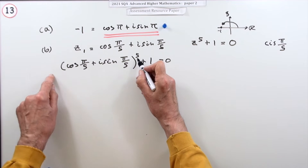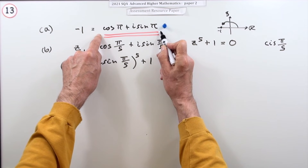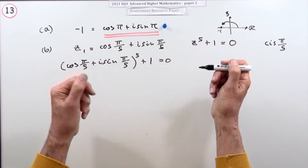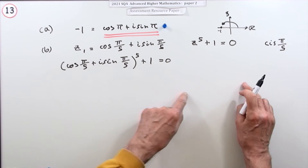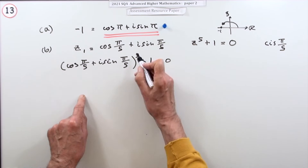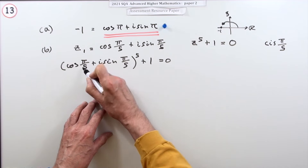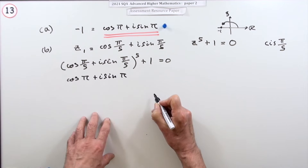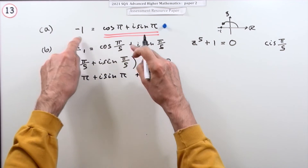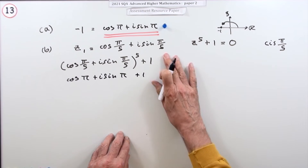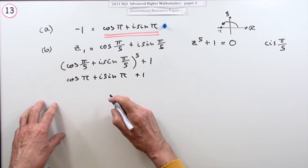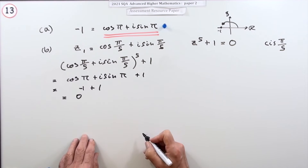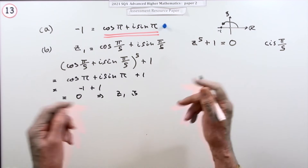By De Moivre's theorem, for a complex number in polar form, when you raise it to a power the modulus is raised to that power and the angles are multiplied. So raising to the power of five multiplies the angle by five, giving cos π + i sin π plus one. From part a, cos π + i sin π equals negative one, so that becomes negative one plus one, which equals zero. Therefore z1 is a root.